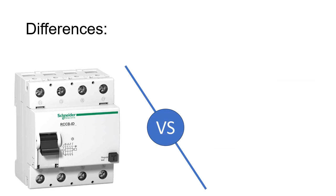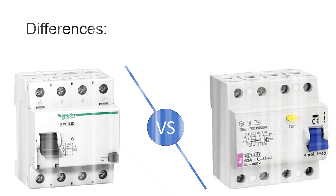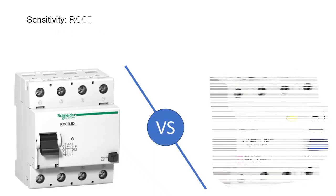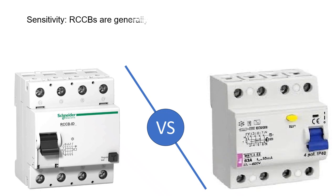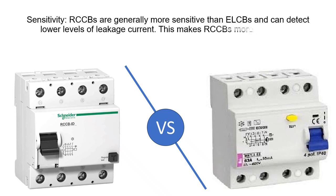Sensitivity: RCCBs are generally more sensitive than ELCBs and can detect lower levels of leakage current. This makes RCCBs more effective in providing protection against smaller electrical faults.